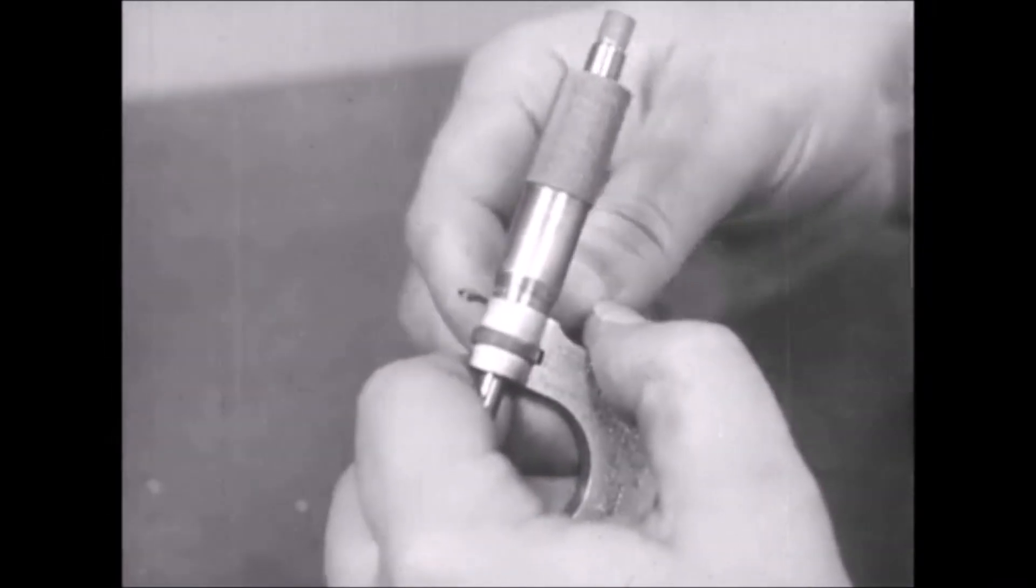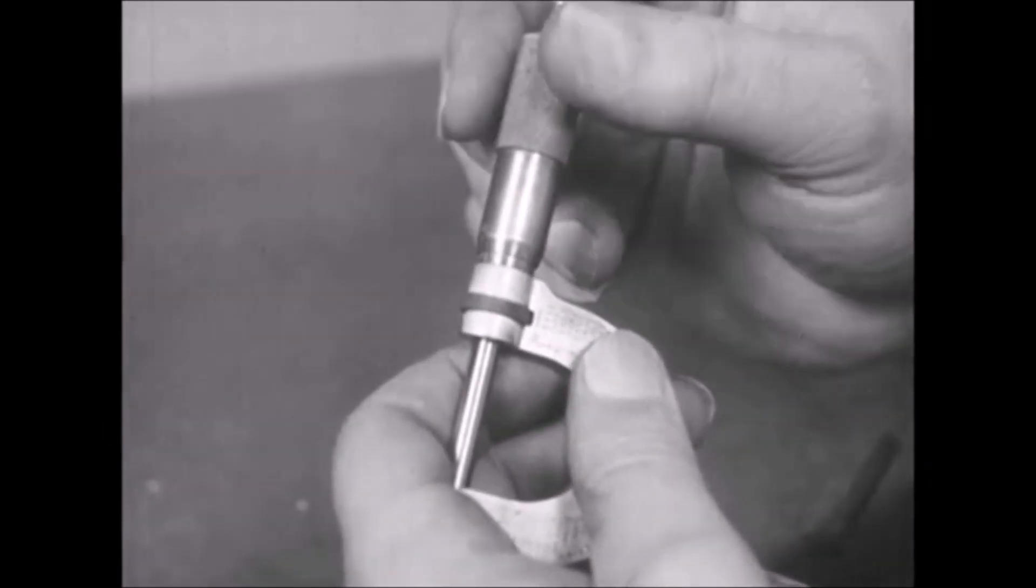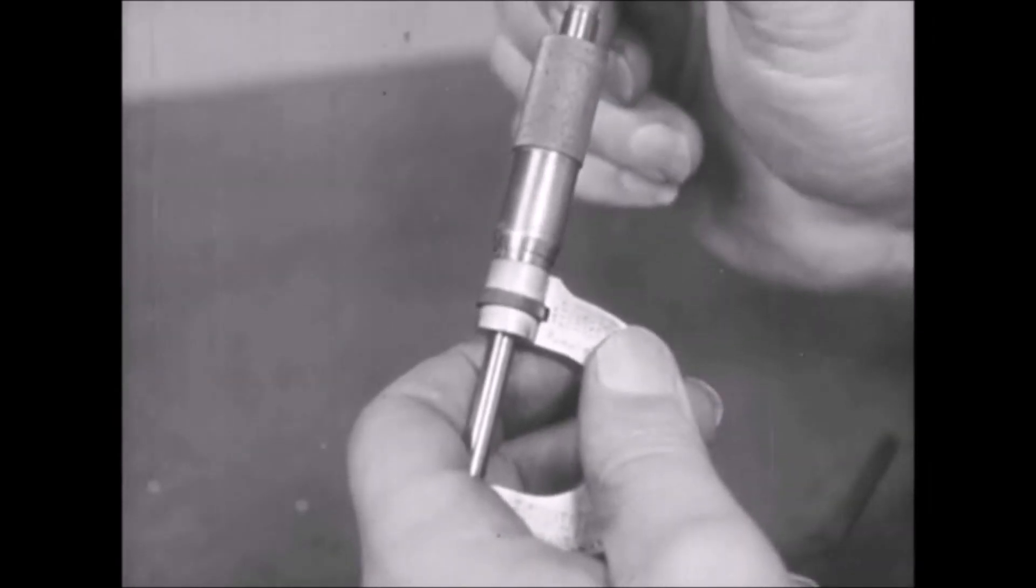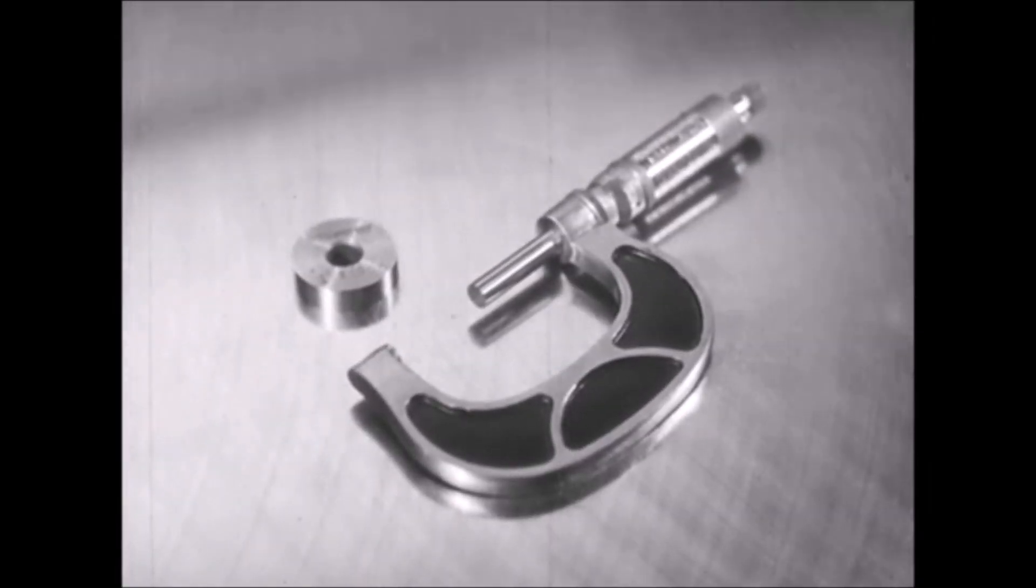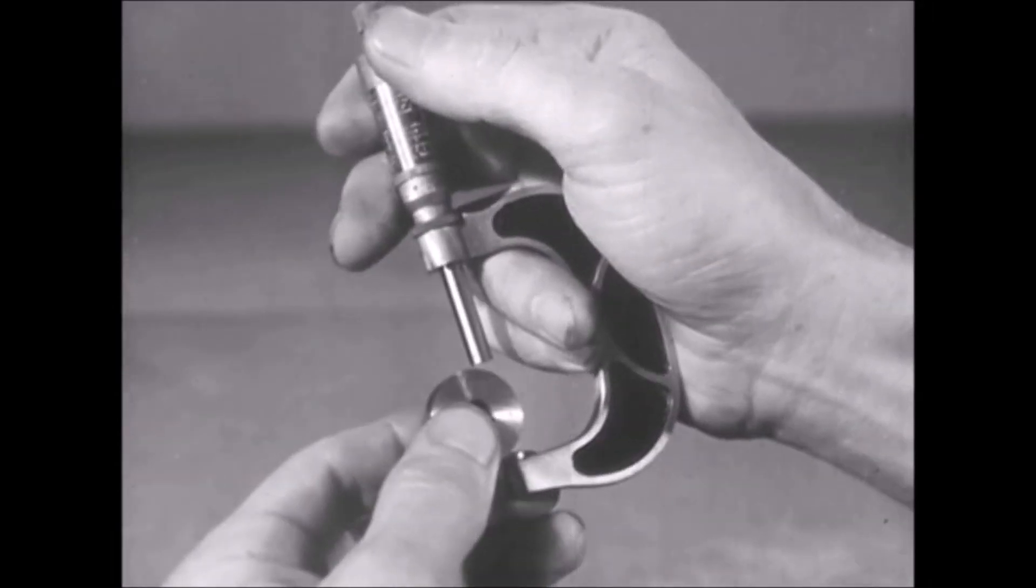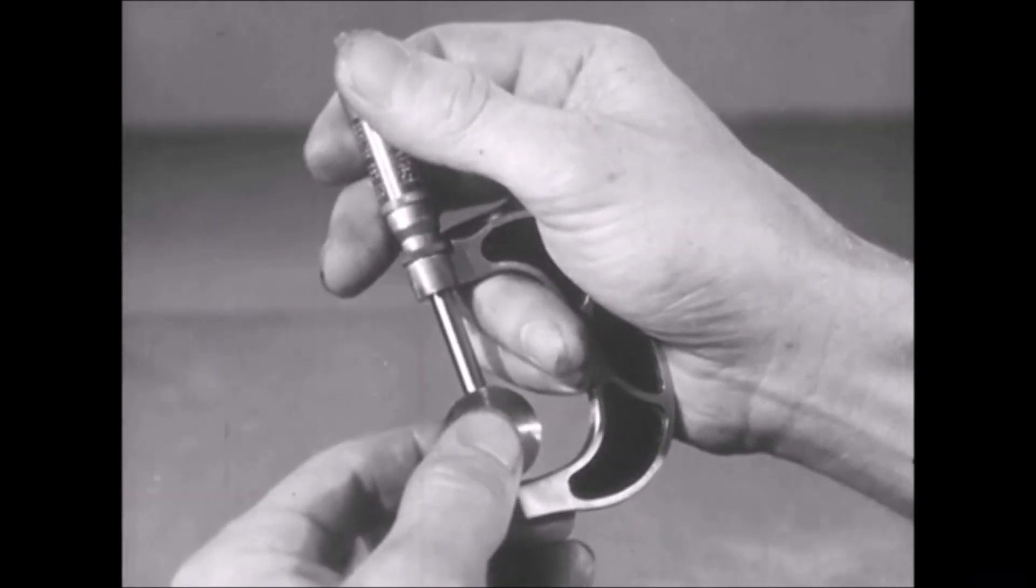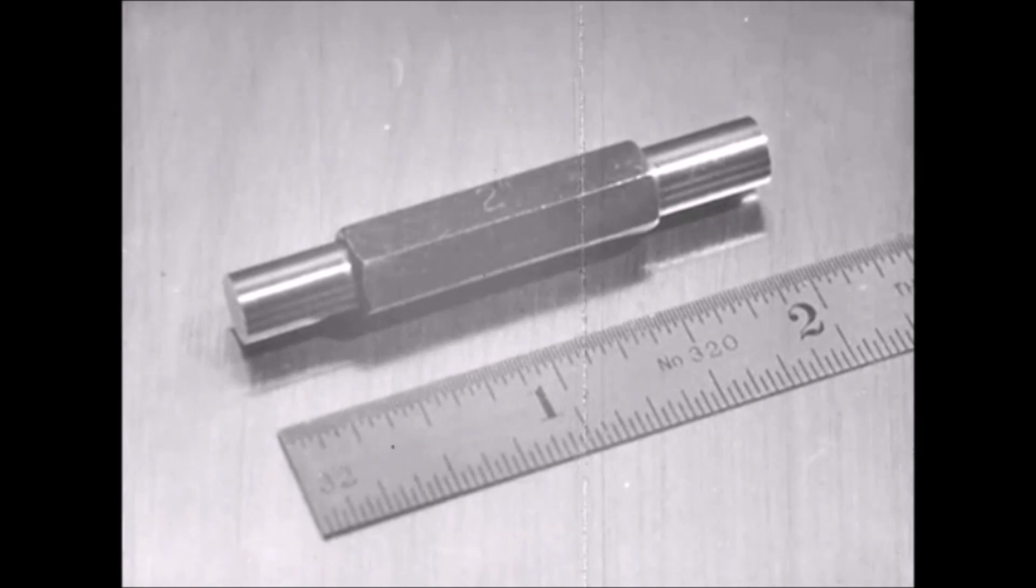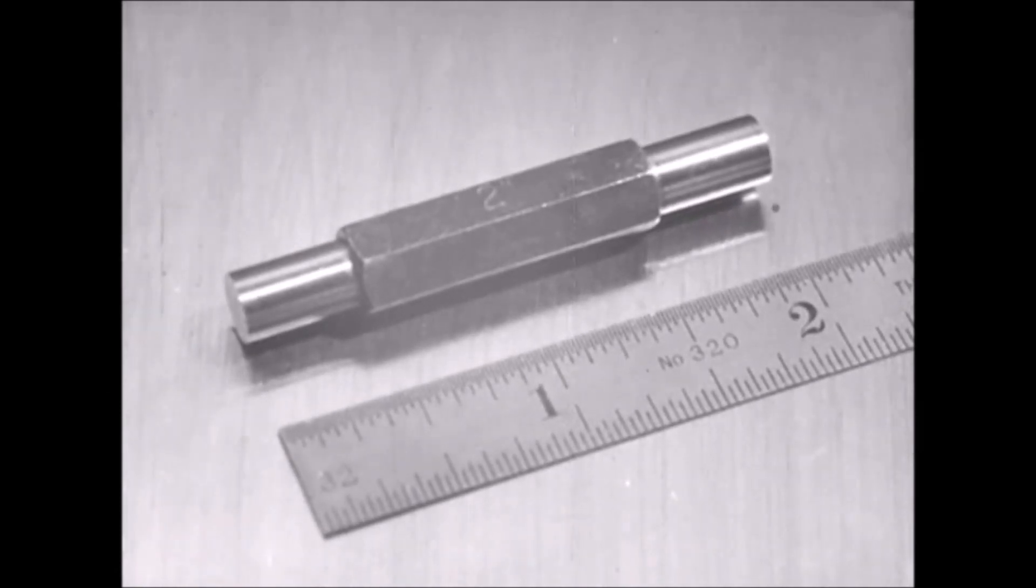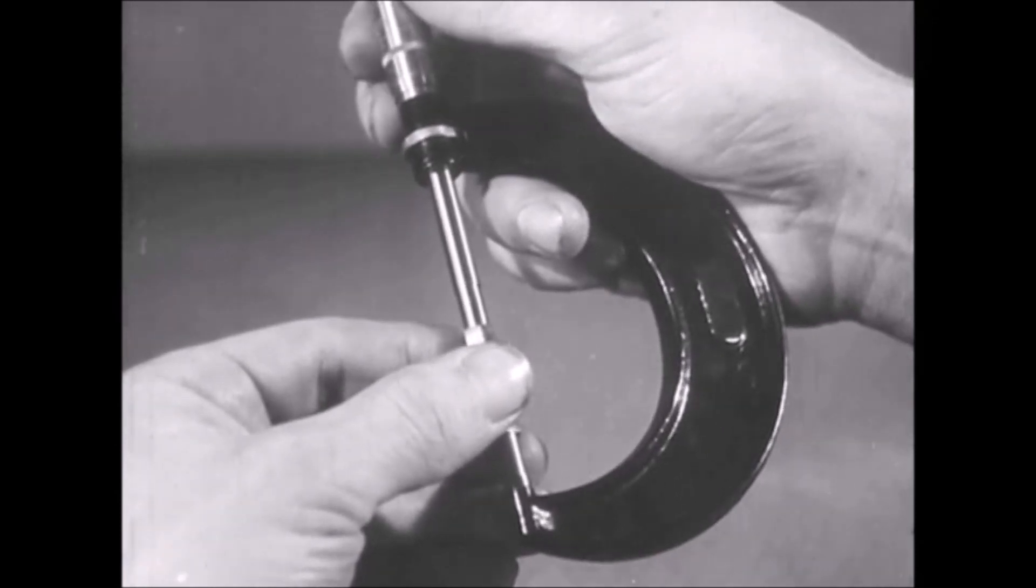All micrometer calipers should be checked frequently, making sure that the zero line on the thimble lines up with the barrel index. Those larger than one inch should be checked with special standards or gauge blocks. A two-inch micrometer is checked with a one-inch standard. When the micrometer is closed down over the standard with just the right tension and feel, it should register zero. A three-inch micrometer is checked with a two-inch standard. Larger instruments are checked with correspondingly larger standards.